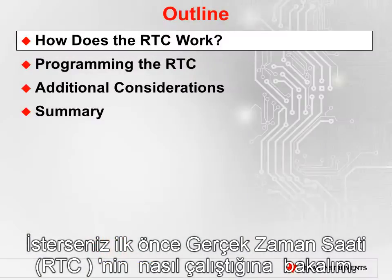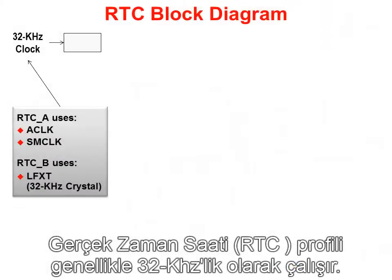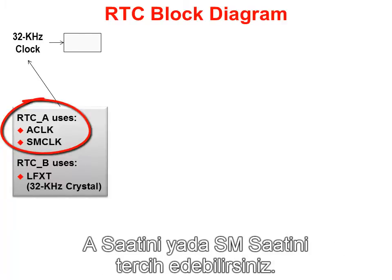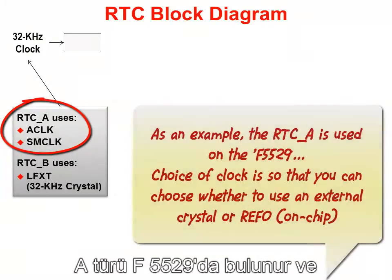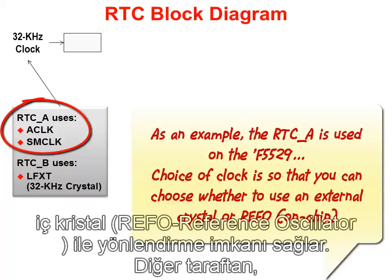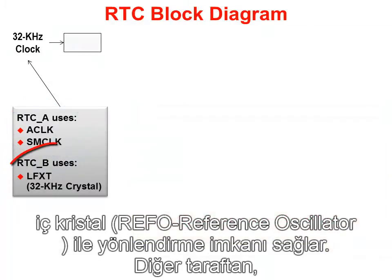The RTC peripheral is usually driven from a 32 kHz clock. In the case of the RTC-A variation, you can choose either the A clock or SM clock. The A variation is found on the F5529 and provides this choice so that you can drive it from the external crystal or the internal reference oscillator.